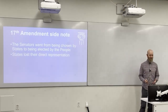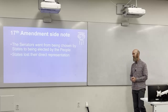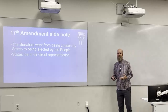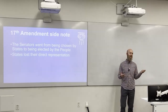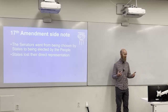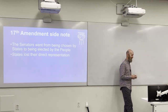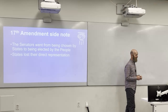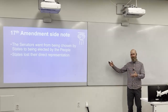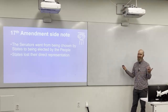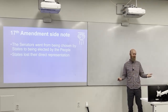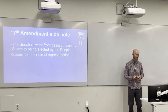Side note: the 17th Amendment changed all of this. Since the 17th Amendment, senators are now elected directly by the people rather than chosen by state legislatures. This eliminated one of the key arguments of the Federalist Papers — that the Senate would always represent the states. Now the Senate represents the people just like the House does.